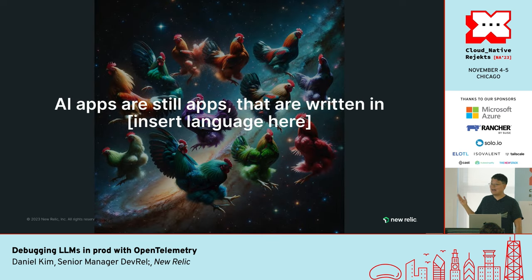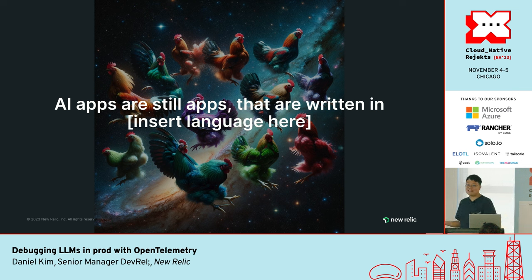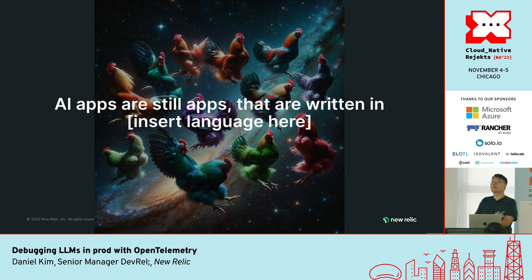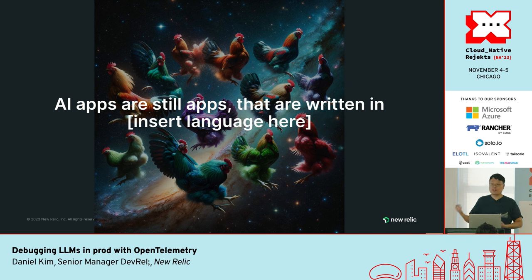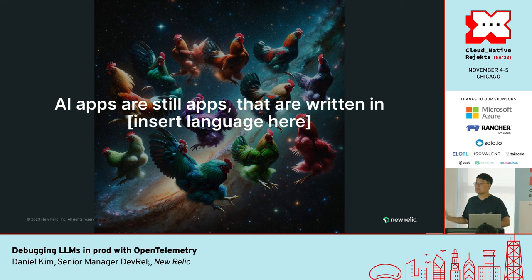Here are some of my closing thoughts about LLMs. AI apps are still apps, written in language. So if you have a LangChain app written in Python — like the Ice Spice app — even though it uses some cool technology, all the principles that we've learned from decades of production engineering still apply. You can still use technologies like OpenTelemetry, Prometheus — all these things we ground our gears on when supporting millions of users — and apply them to the same things, because it's just an API call that's the difference.